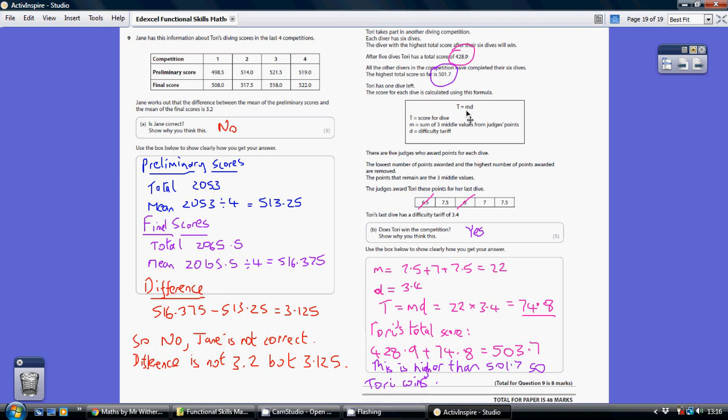Now, D is the difficulty tariff, and we're told that that's 3.4. And then we're told the total number of points scored for each dive—you just do M times D. So that's 22 times 3.4, giving me a score for Tori's final dive of 74.8.